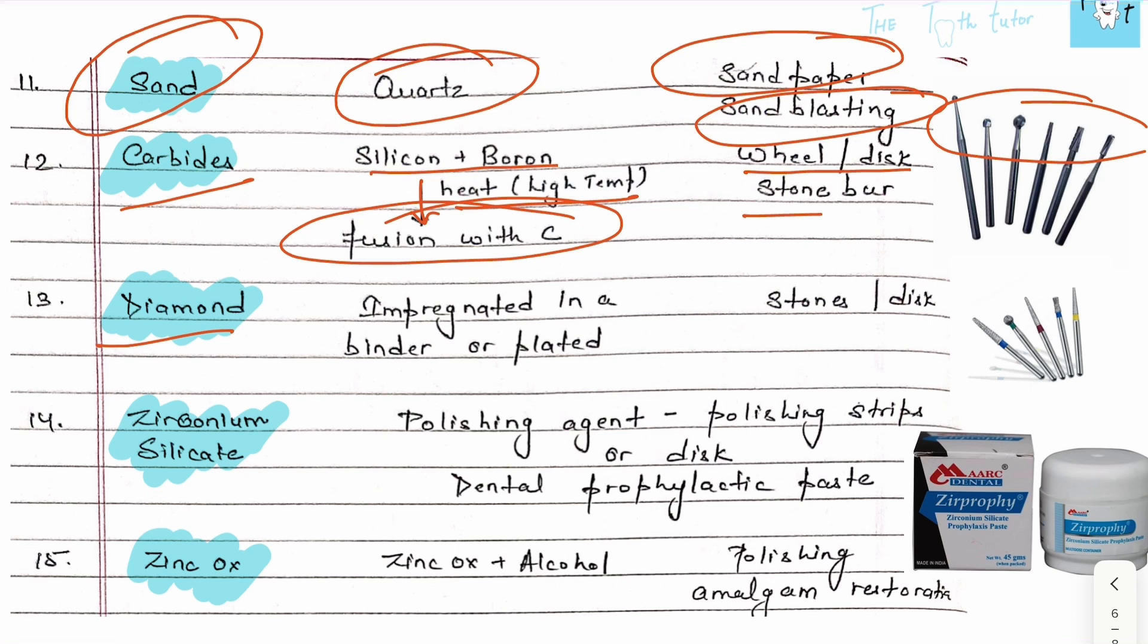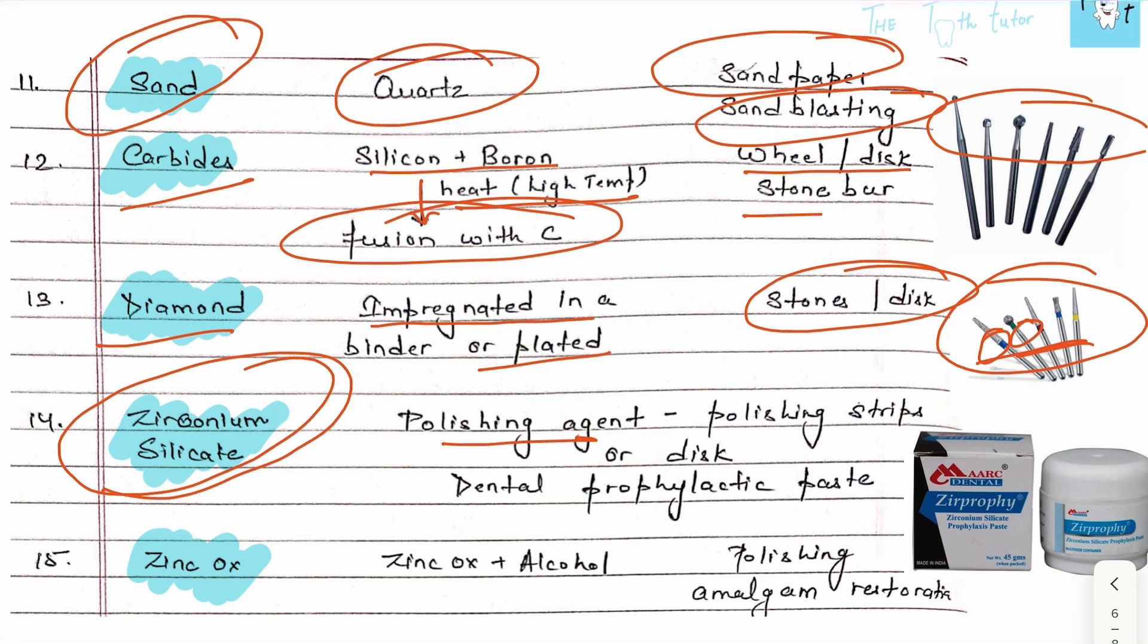Diamond is used to make stone discs or burs. It has various grading depending on how fine the diamond is, and it's color-coded based on the grading. Then we have zirconium silicate, a polishing agent obtained in polishing strips or discs, or used as a dental prophylactic paste. We have zinc oxide - by mixing zinc oxide and alcohol, it's used for polishing amalgam restorations.